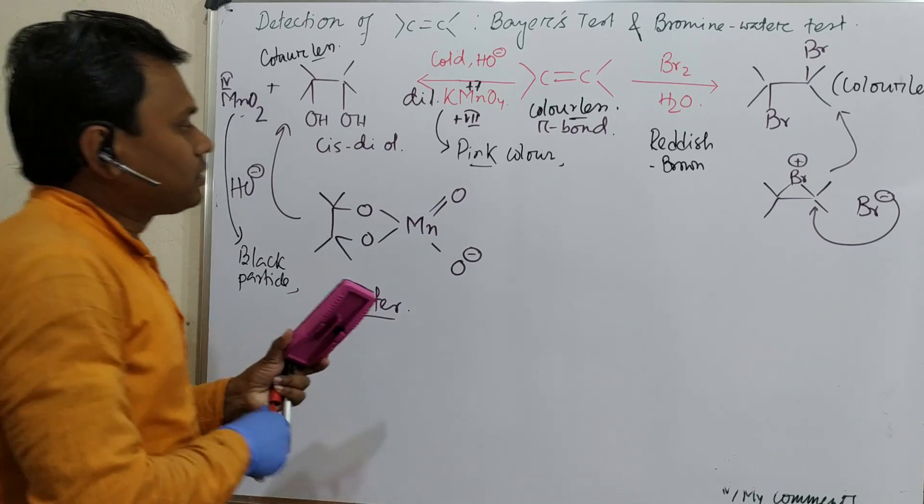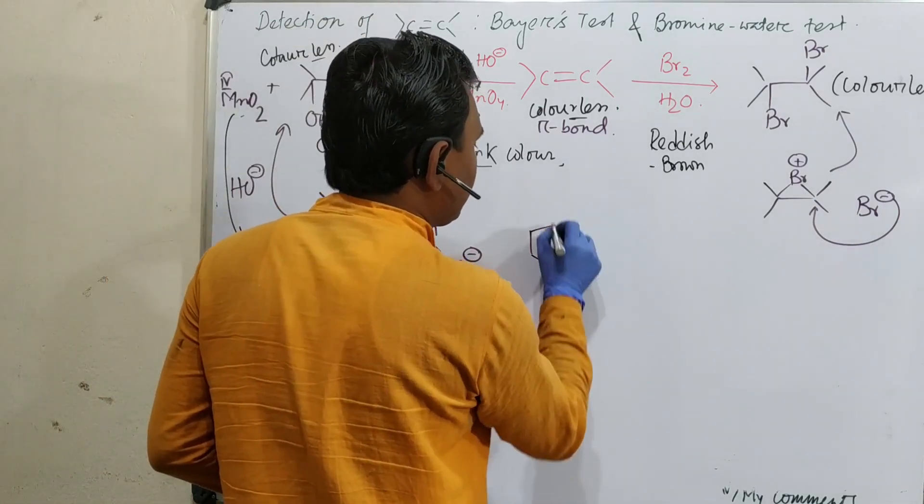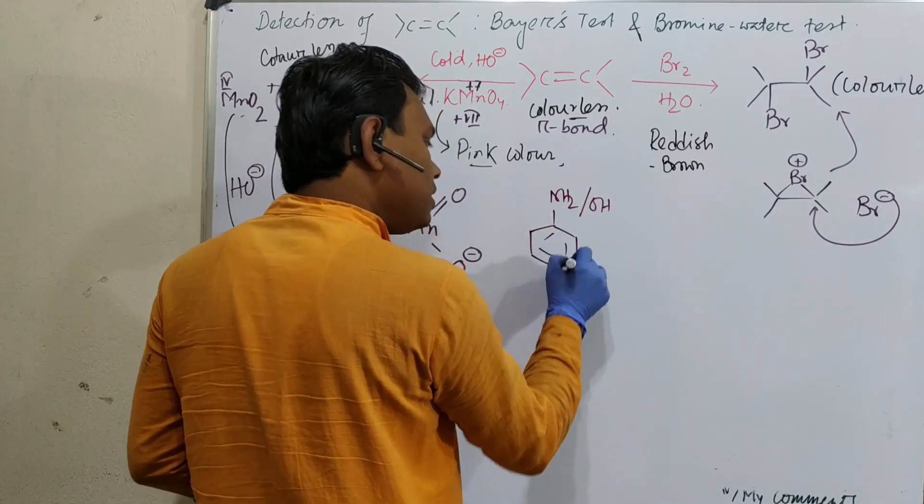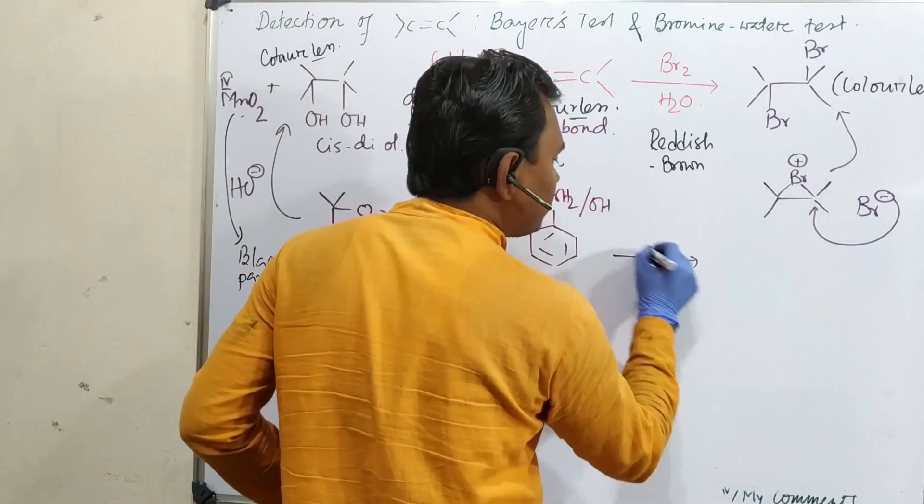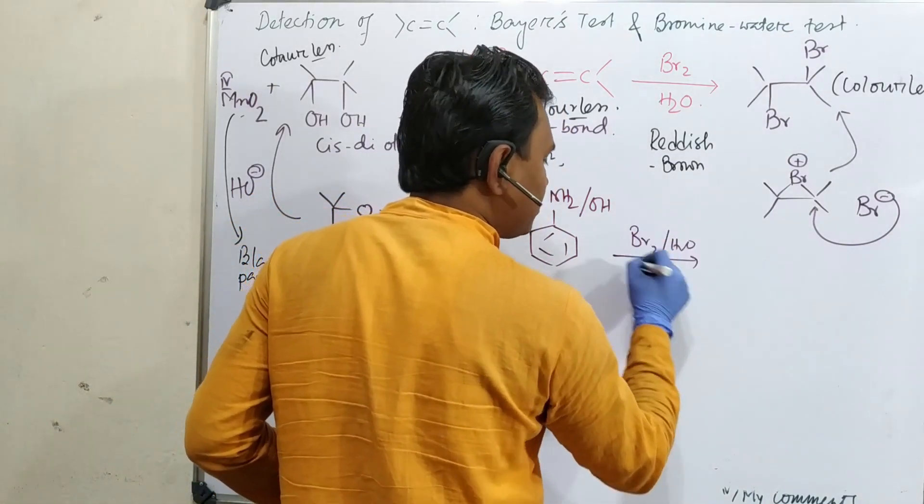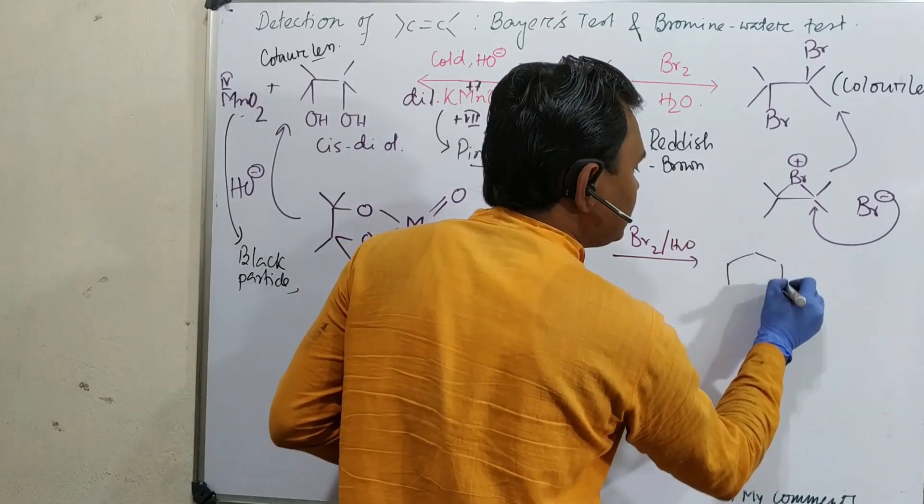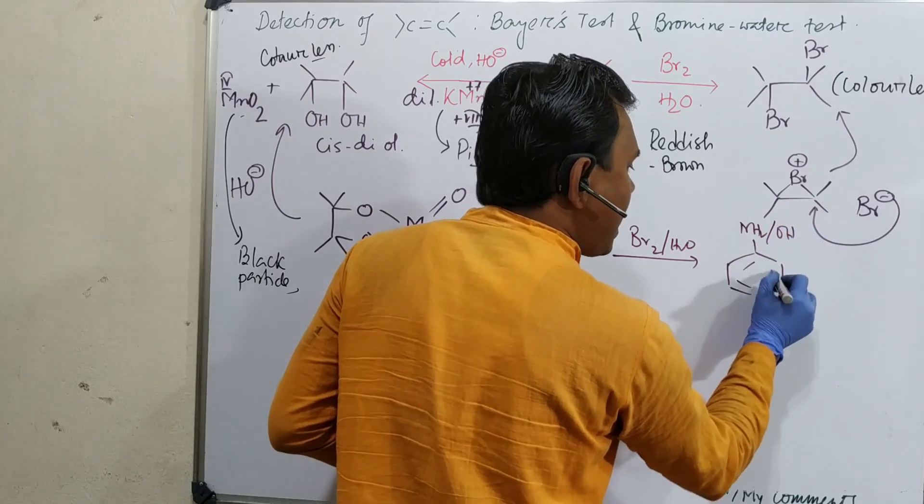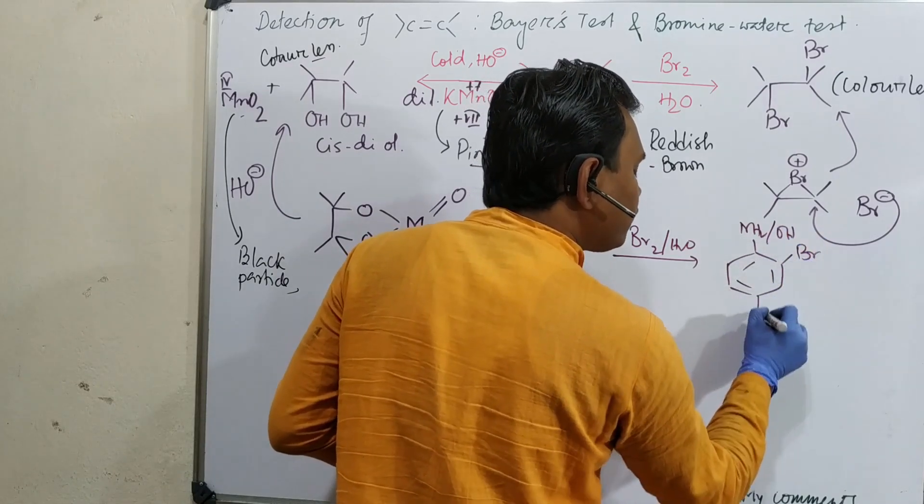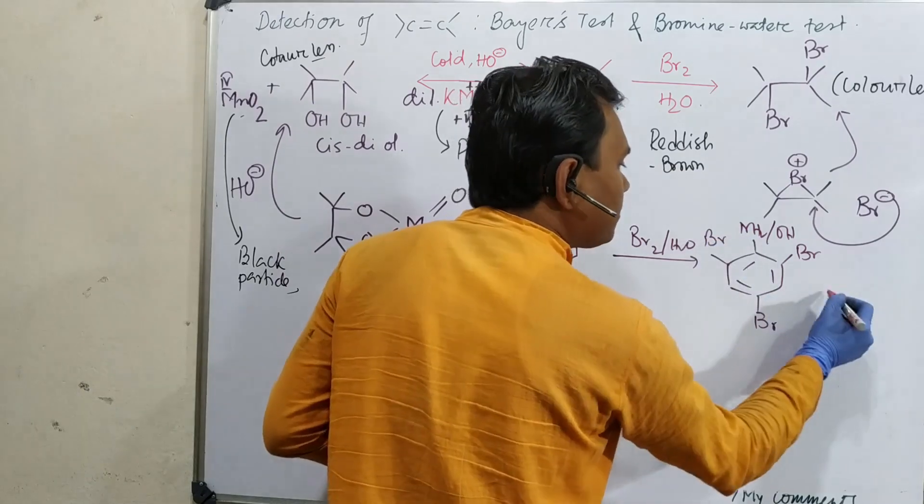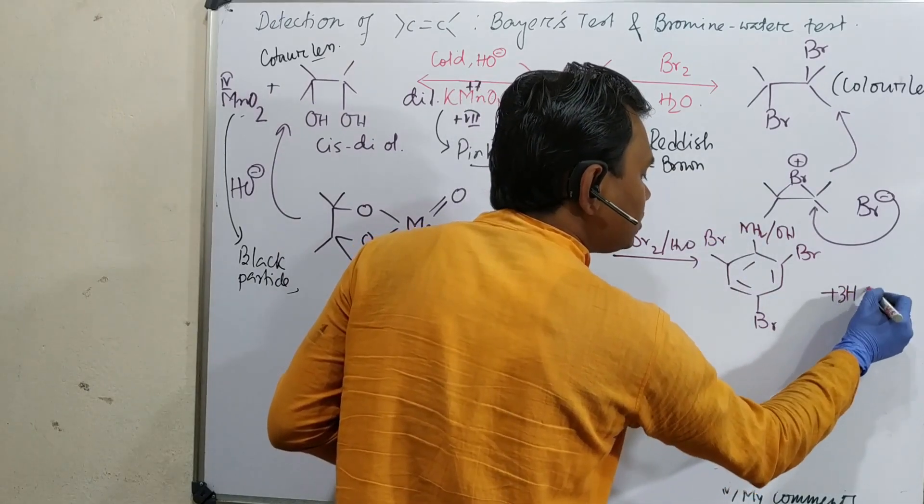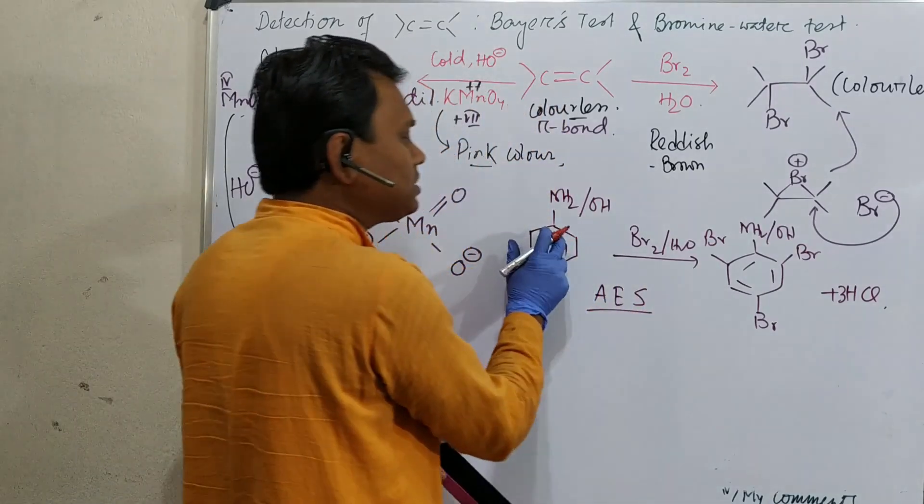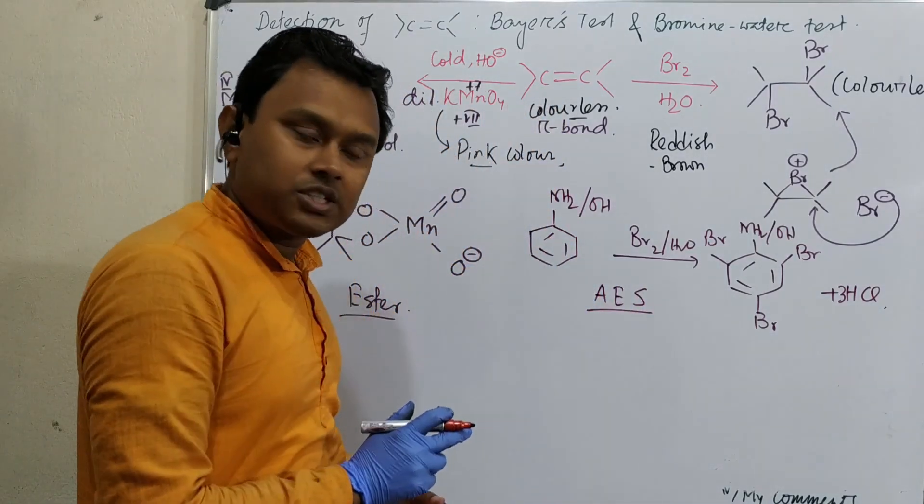If you take aniline or phenol, just I am writing in this way. What happens if you put bromine water? The product is tribromophenol or aniline plus three molecules HBr. This is aromatic electrophilic substitution.